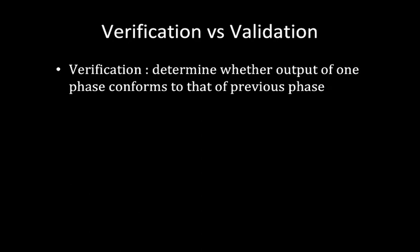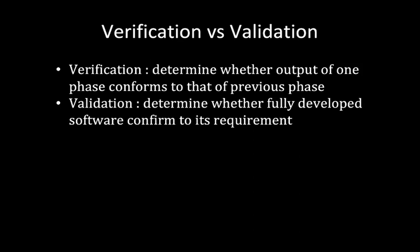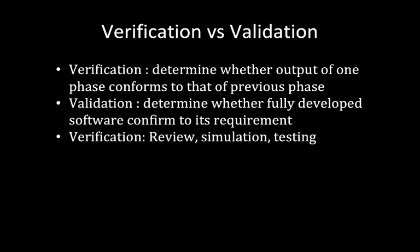Verification determines whether the output of one phase confirms to that of the previous phase in software development. Validation is the process of determining whether a fully developed software confirms to its requirements specification — that is, the SRS — checking whether we are developing the correct requirements. Verification can be done using review, simulation, and testing, while validation is done through system testing.